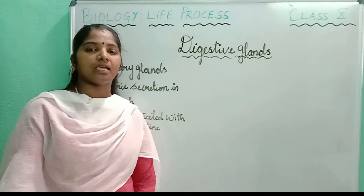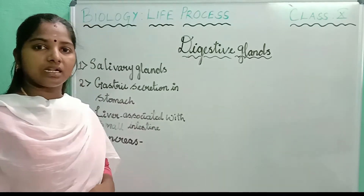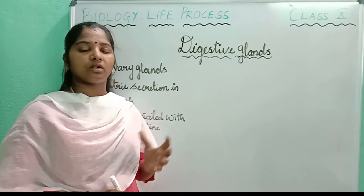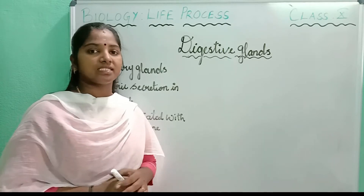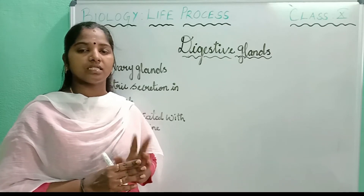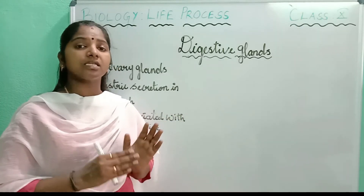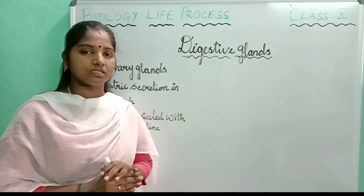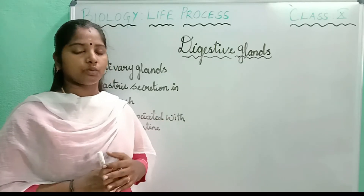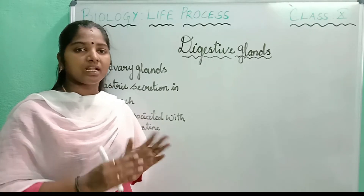Hi everyone, this is Kavita again. Welcome to my biology class. I hope, like last class, we have seen about the digestive system — how human beings are obtaining their nutrition and how the digestive system works. We just saw that the digestive glands are of two parts: one is the alimentary canal and the other one is the associated glands. In the last class we have seen about the alimentary canal.